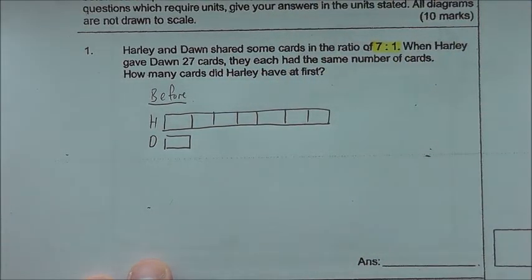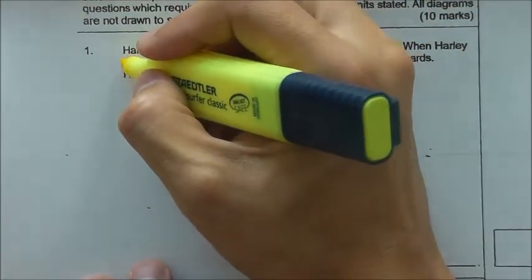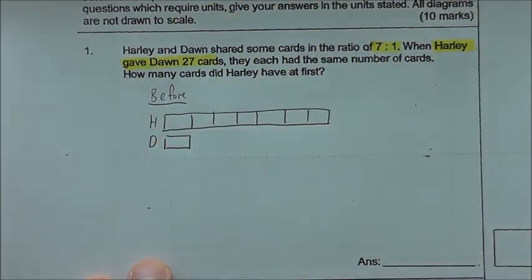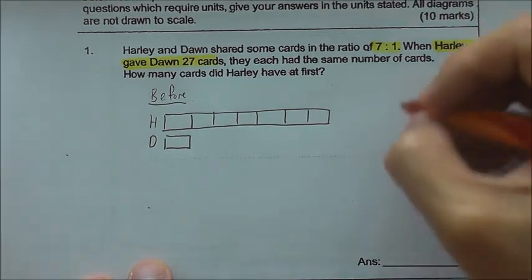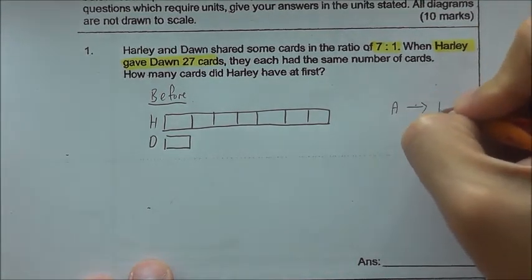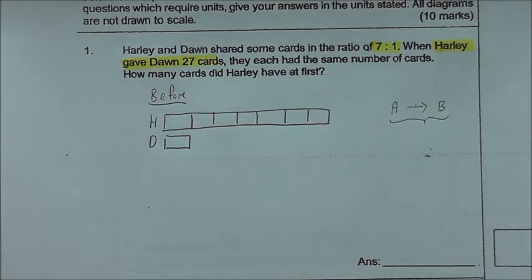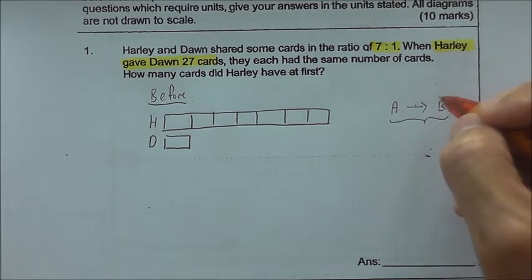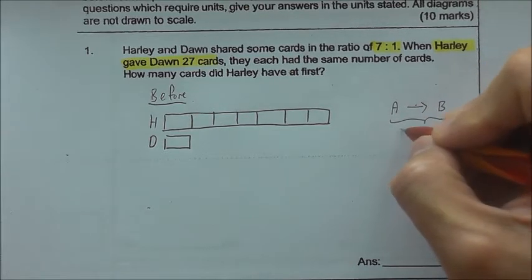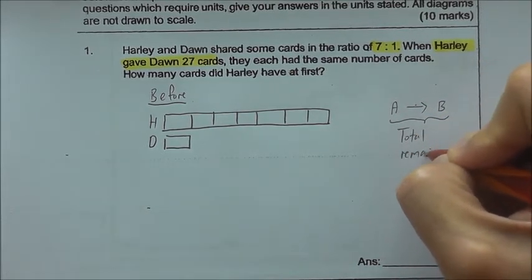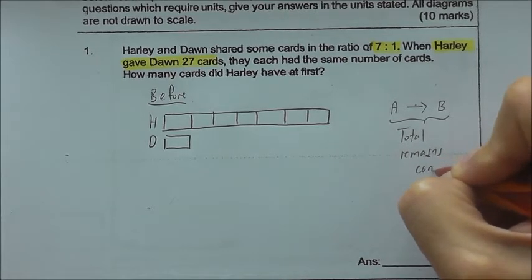And guys, I want you all to look at this part carefully. When Harley gave Dawn 27 cards, whenever there's someone like person A gives to person B, that is something within the group that remains constant. If I were to give a certain amount to you, the total that I have plus what you have, it has to be the same. So please take note: if A gives to B or B gives to A, the total remains constant, which is the same.